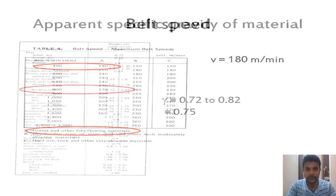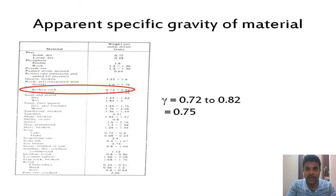The apparent specific gravity of material is given as salt, and we are considering it as broken rock salt. The specific gravity is given to be 0.72 to 0.82. We are taking a value of 0.75.